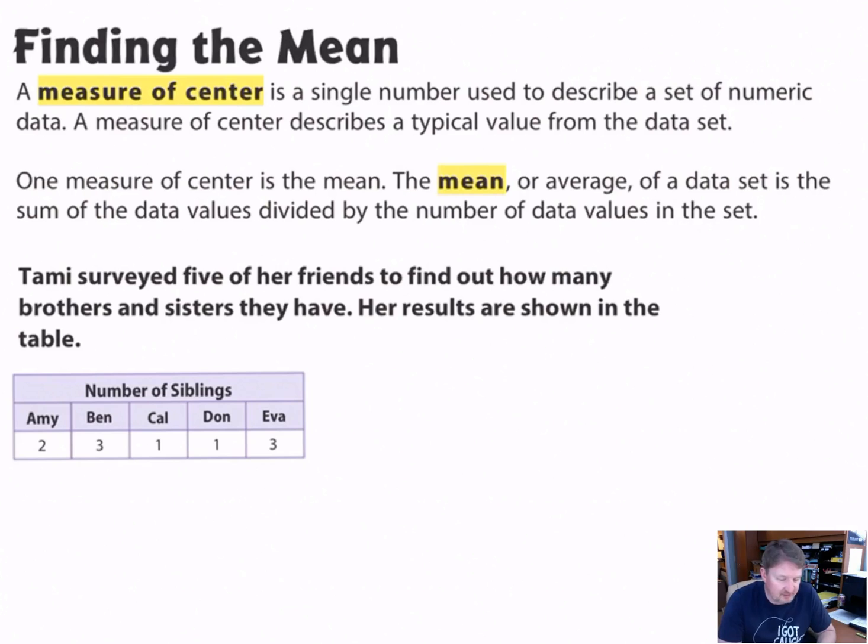Finding the mean, or finding the average, a measure of center, is a single number used to describe a set of numeric data. It describes a typical value from the data set. It doesn't describe everything perfectly, but on average—it's just like in basketball, a guy might average 18 points a game but he doesn't score 18 points every game. He may score eight points one game, 27 points another game. Or like a running back averages three yards a carry. That doesn't mean he's going to do that every single time. It just means on average.